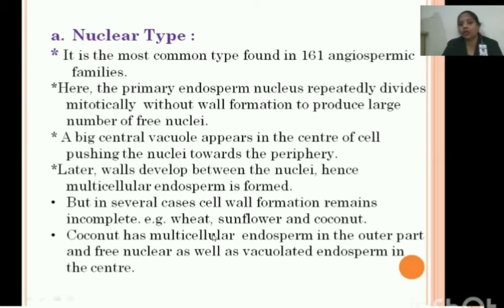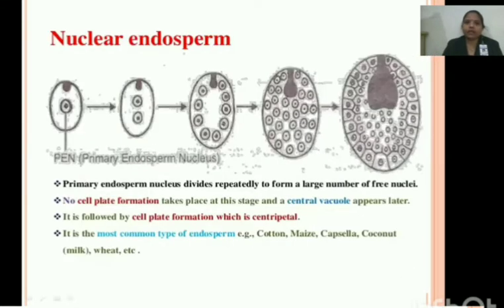In several cases, cell wall formation remains incomplete — for example in maize, sunflower, and coconut. In coconut, there is multicellular endosperm in the outer part and free nuclear endosperm along with a vacuole in the center, making it a classic example of nuclear endosperm.